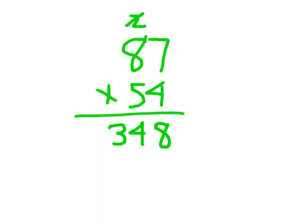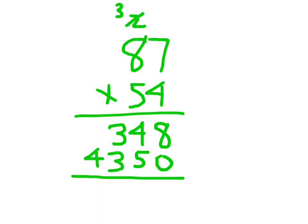Now we're working with the 5 which is worth 50, so we place a 0. Then 5 times 7 which is 35 — place the 5 and regroup the 3. Then 5 times 8 which is 40, plus 3 which is 43. Add those 2 numbers together, and we have our answer for 87 times 54, which equals 4,698.